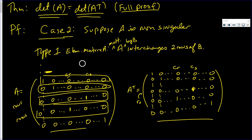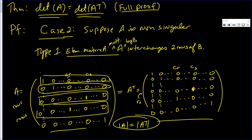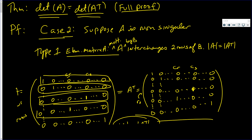Since A and A transpose are identical matrices, their determinants are equal. So the determinant of A equals the determinant of A transpose when A is a Type 1 elementary matrix. We establish that for Type 1. Now let's go on to Type 2.